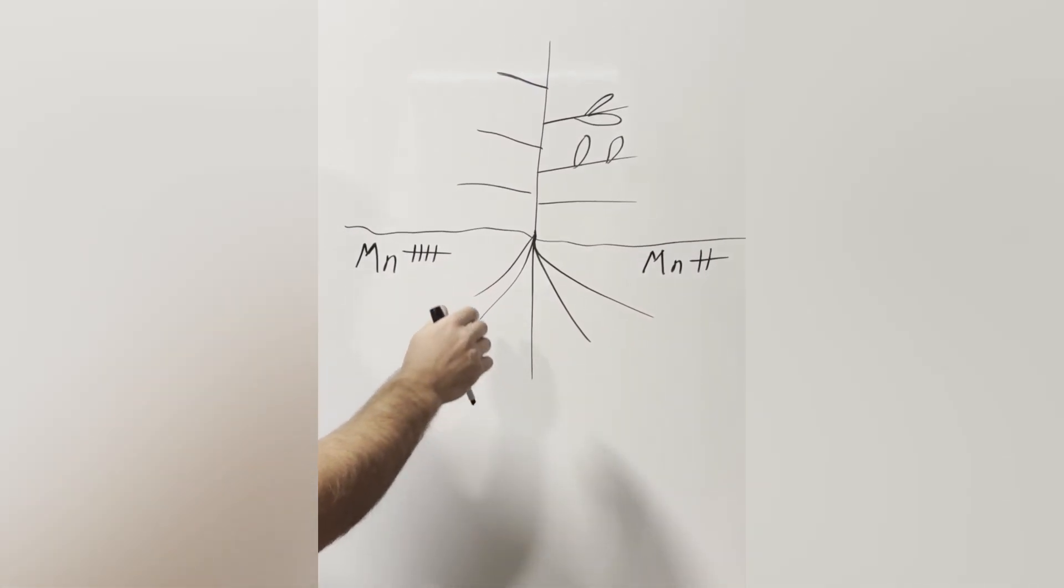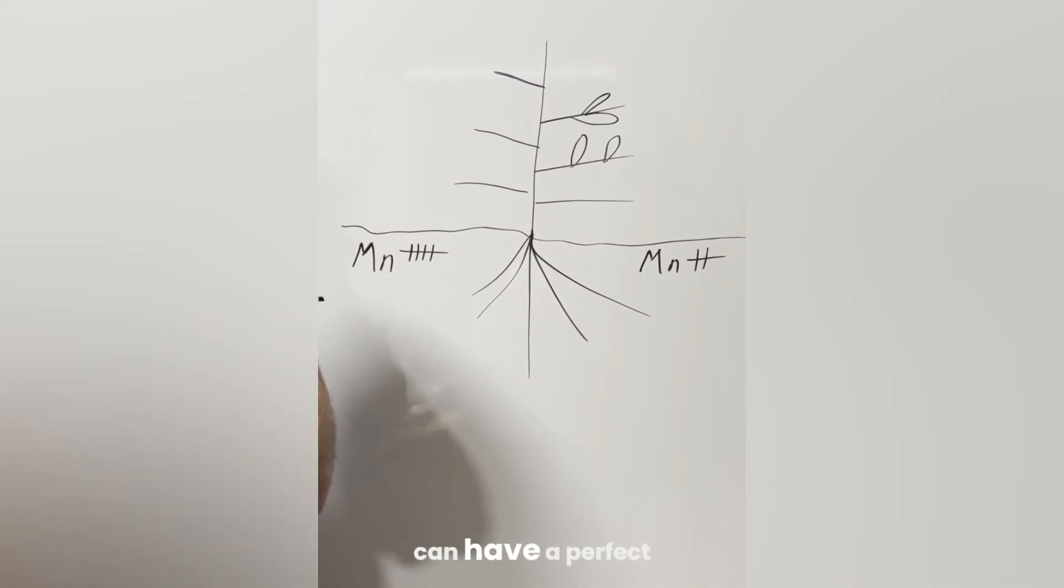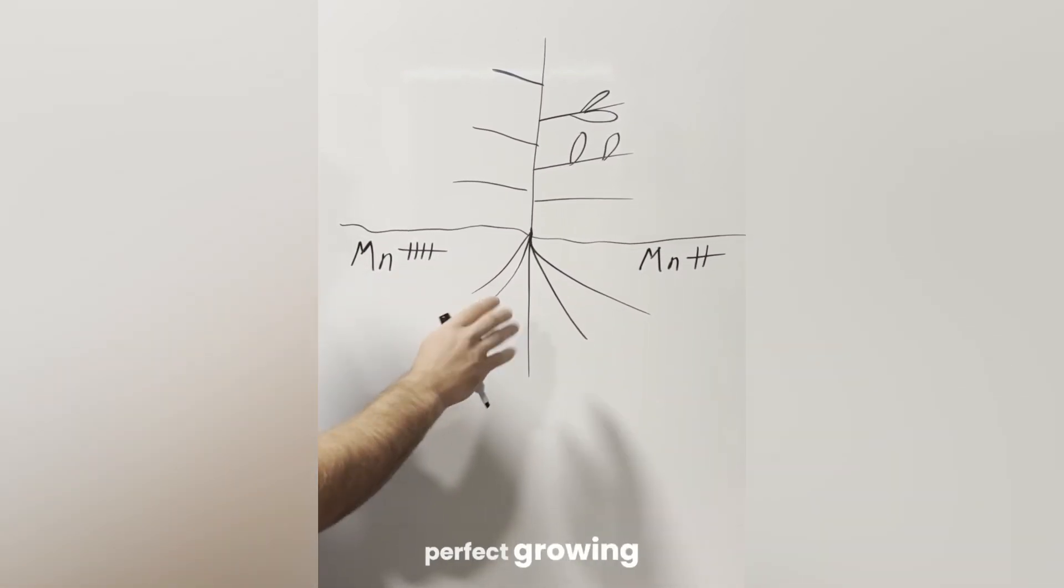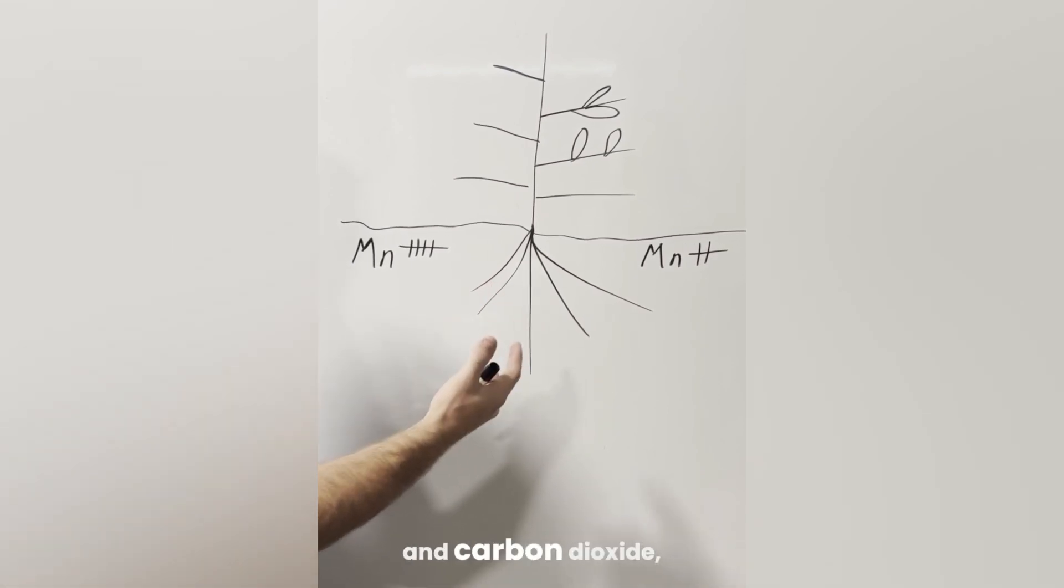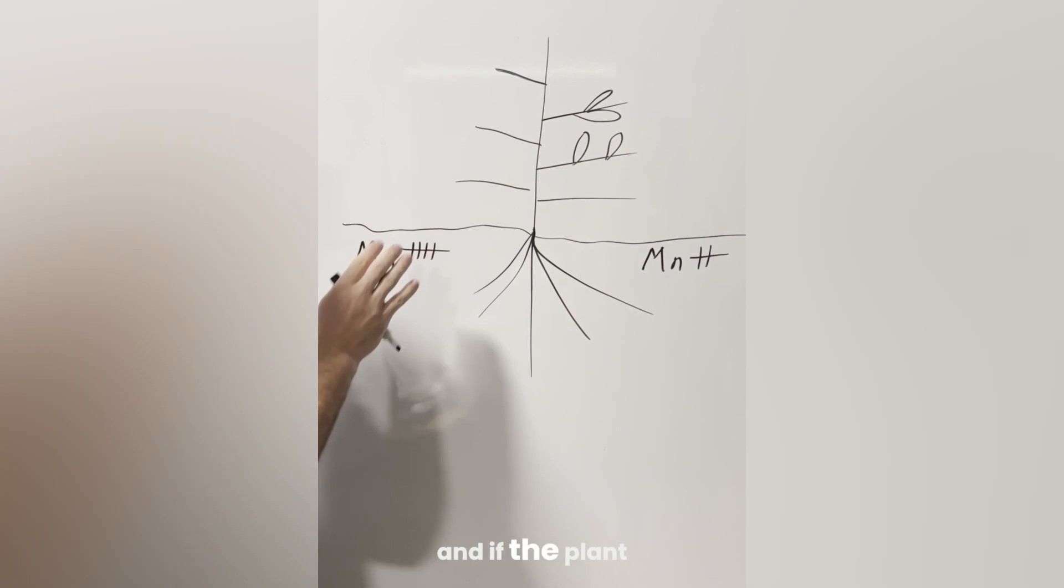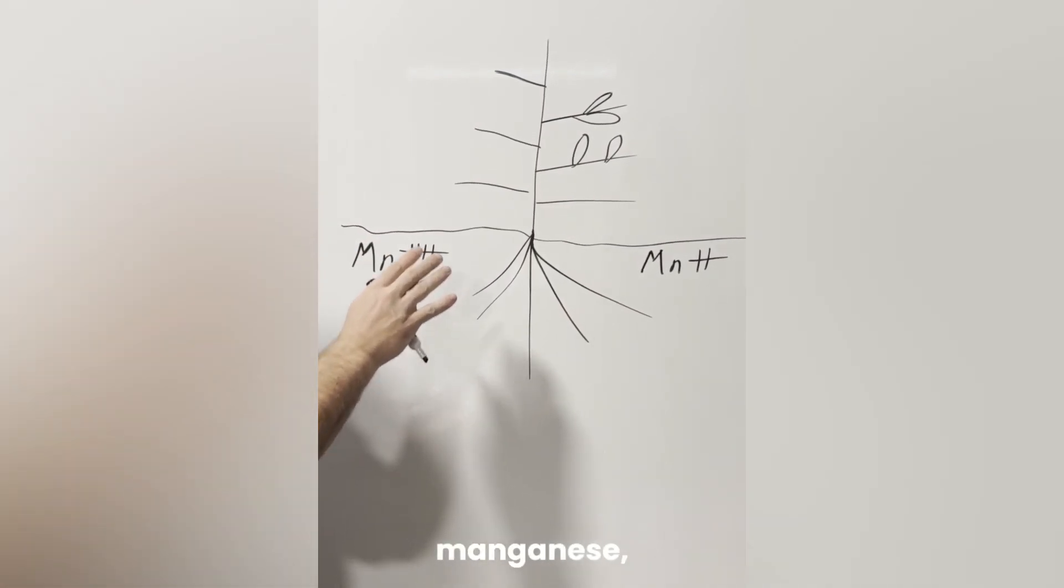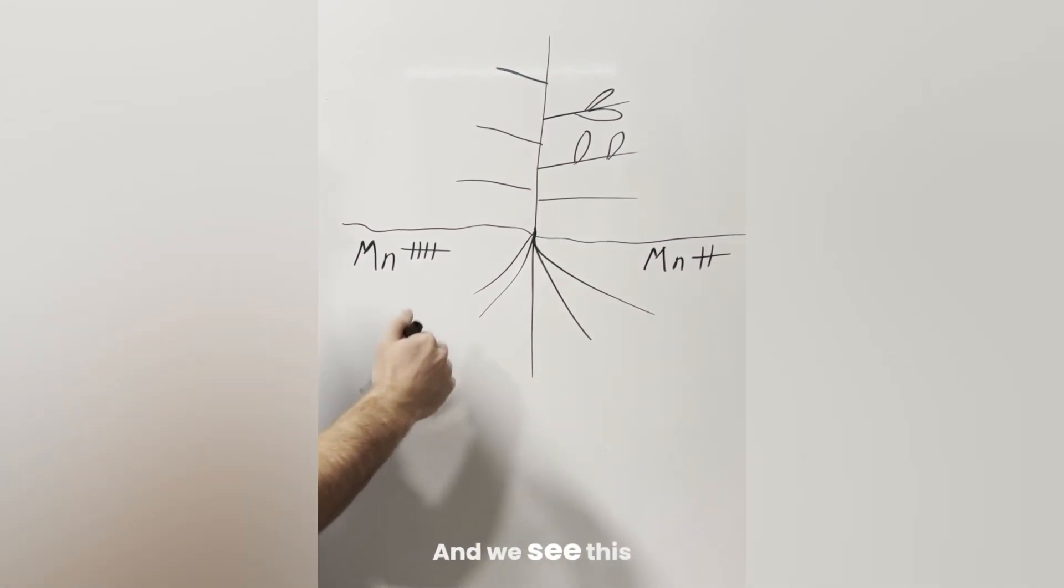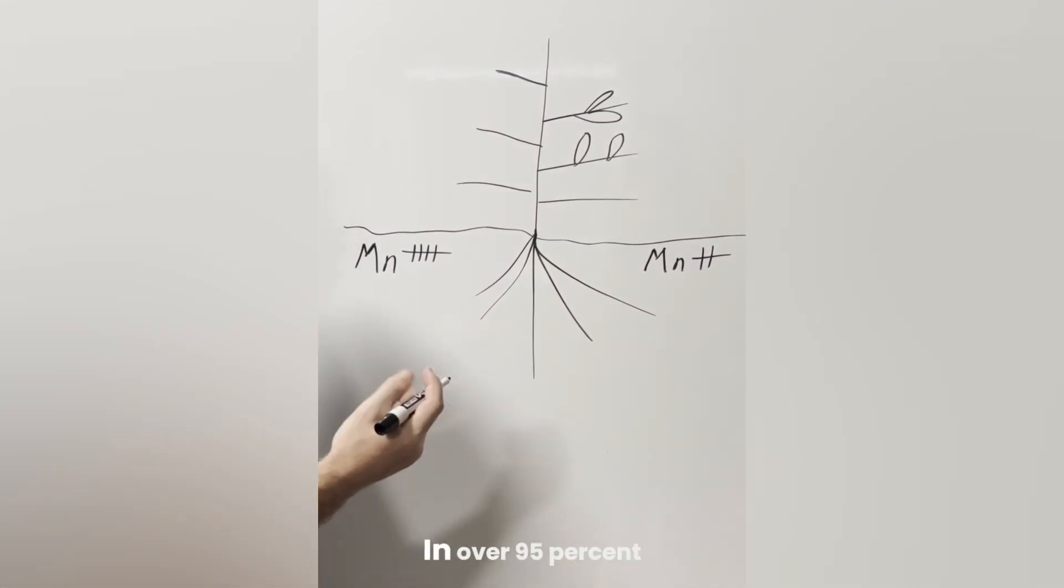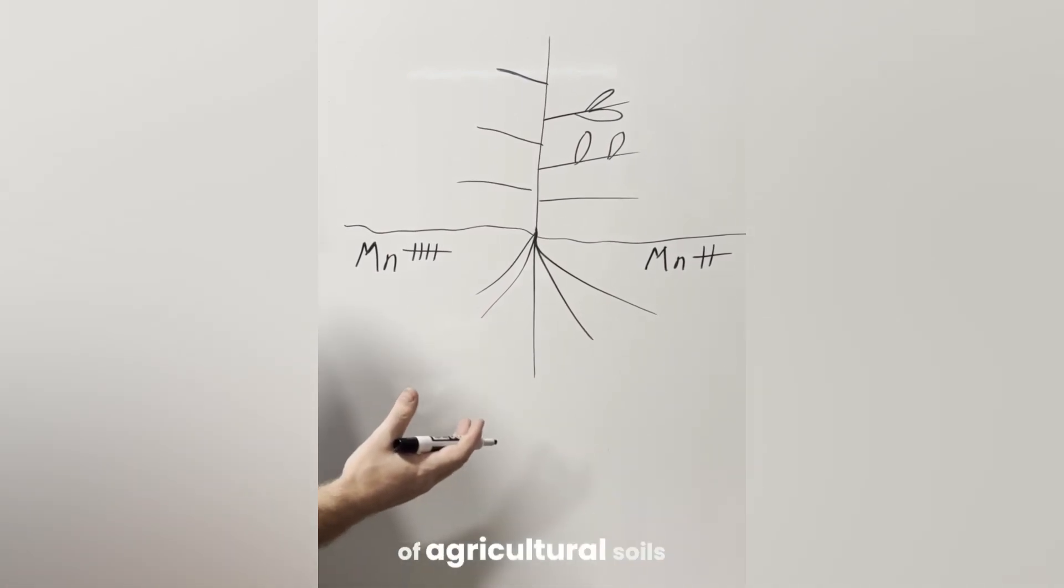So that means you can have a perfect environment, perfect growing conditions, with optimal levels of lighting and sunlight and moisture and carbon dioxide, and if the plant doesn't have enough manganese, manganese becomes the bottleneck that limits photosynthesis. And we see this very commonly in over 95% of agricultural soils in North America